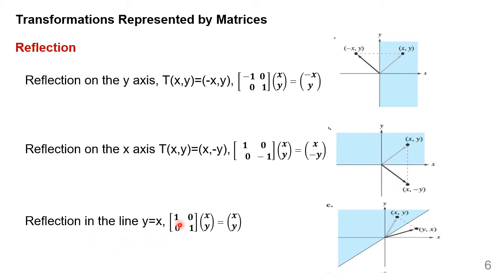We will take the next one: reflection in the line y = x. We multiply matrix A with (x, y) and get the same (x, y). So with the identity matrix [[1, 0], [0, 1]], multiplying by (x, y) gives (x, y). Suppose if I want (y, x), then the matrix A has to be [[0, 1], [1, 0]], and the answer is going to be (y, x).